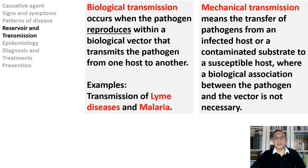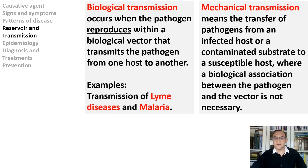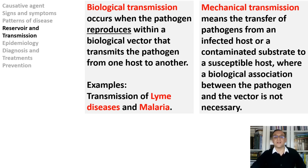In contrast to biological transmission, there is mechanical transmission. Mechanical transmission means the transfer of a pathogen from an infected host or contaminated substrate to a susceptible host, where a biological association between the pathogen and the vector is not necessary. Mechanical vectors such as house flies, mice, rats, dogs, cats, and even humans can pick up an infectious agent on the outside of their body and transmit it through physical contact. House flies are known to transmit bacterial, parasitic, and viral diseases to humans and animals as mechanical vectors.